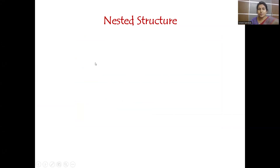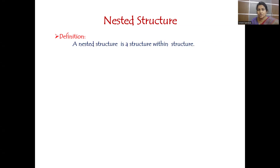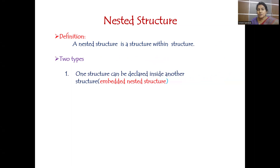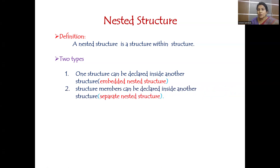Let's see what is meant by a nested structure. You already know what nesting means — writing one if inside another if. Here, a nested structure means writing one structure inside another structure. There are two types: in the first style, one structure can be declared entirely inside another structure, which we call an embedded nested structure. In the second style, you declare one structure separately but declare its variable inside another structure — we call that a separate nested structure.